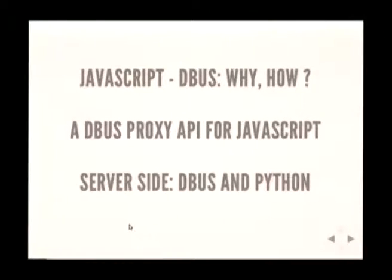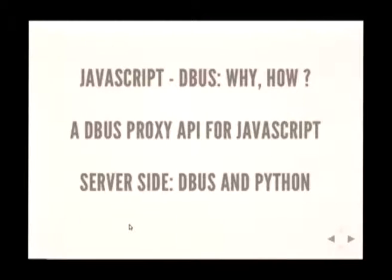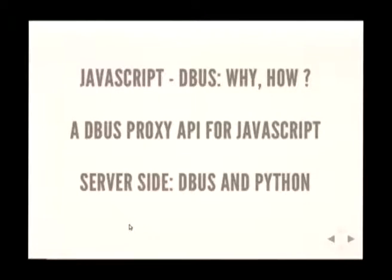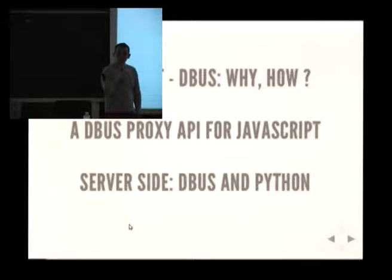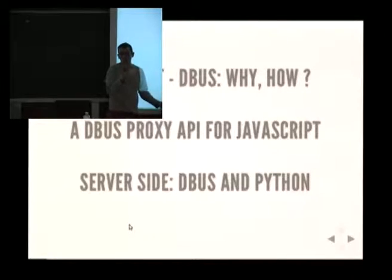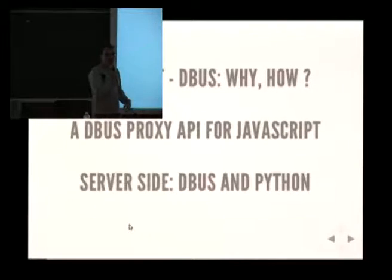First I'm going to discuss why we want to do DBus proxies for JavaScript and how we do it. Then I'll go through the JavaScript API and how you can use the DBus proxy directly in JavaScript with a simple example. Then I'll show the server side — how you run the Python server, security, and that kind of thing.